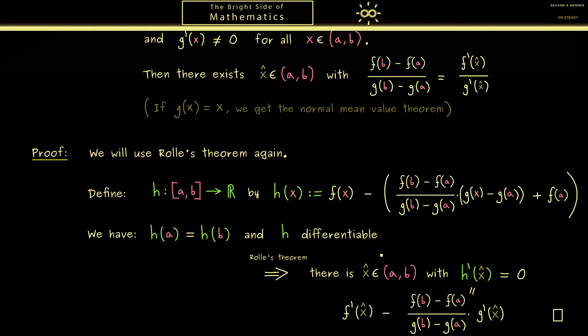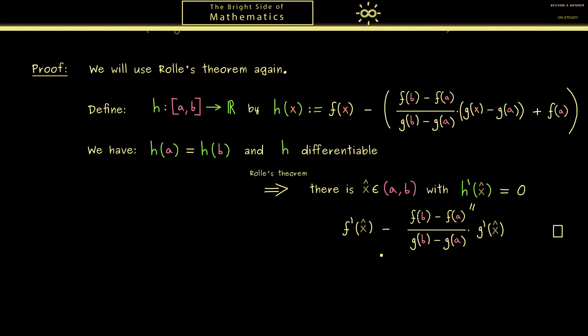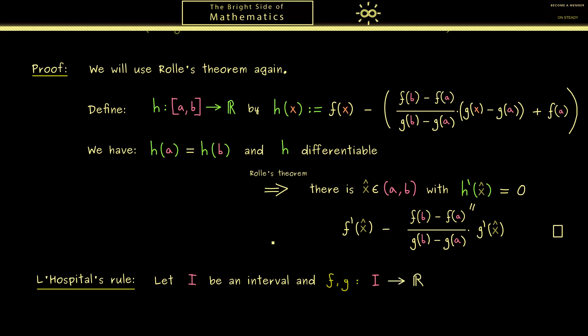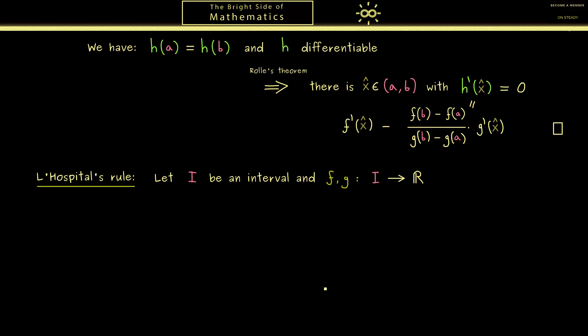Ok, now as promised we want to use this result to prove L'Hôpital's rule. In the first step let's formulate the theorem. I already told you we can use it to calculate limits. Therefore we need two functions defined on the same domain I. Moreover, it should be an interval and the functions we call f and g. Usually the limits one wants to calculate here are given with a quotient. Namely, we write it as the limit x to x₀ of f(x) divided by g(x). Of course you can always put such a limit to paper, but then the question arises: does it actually exist? We have a nice possibility to answer this question for functions that are differentiable.